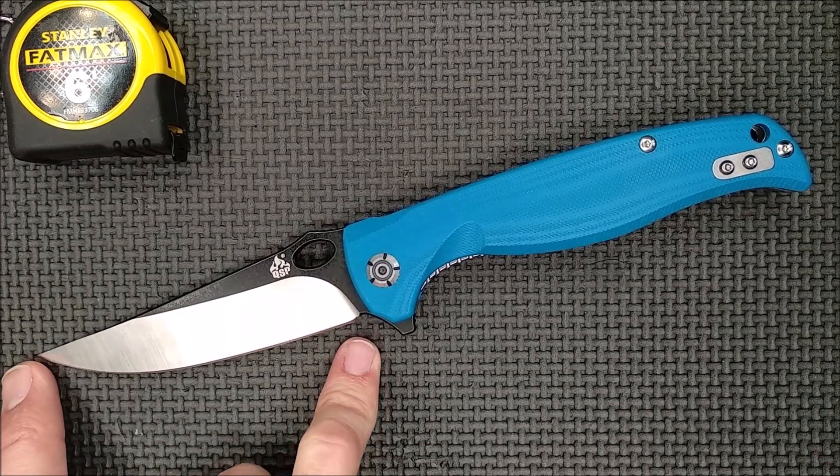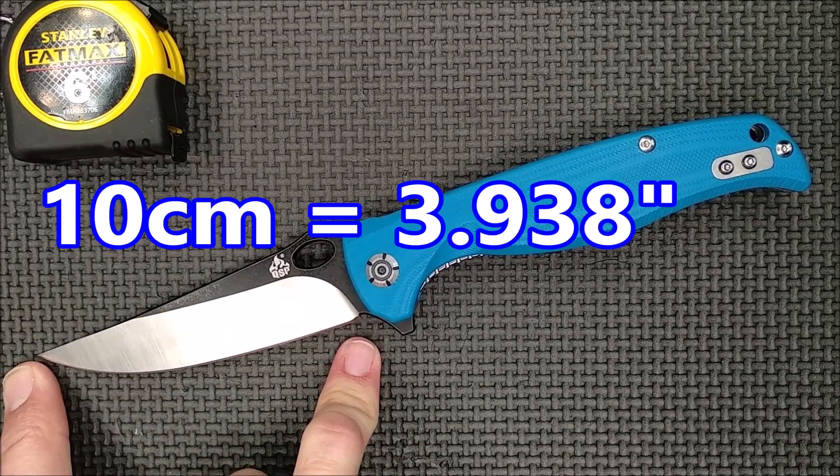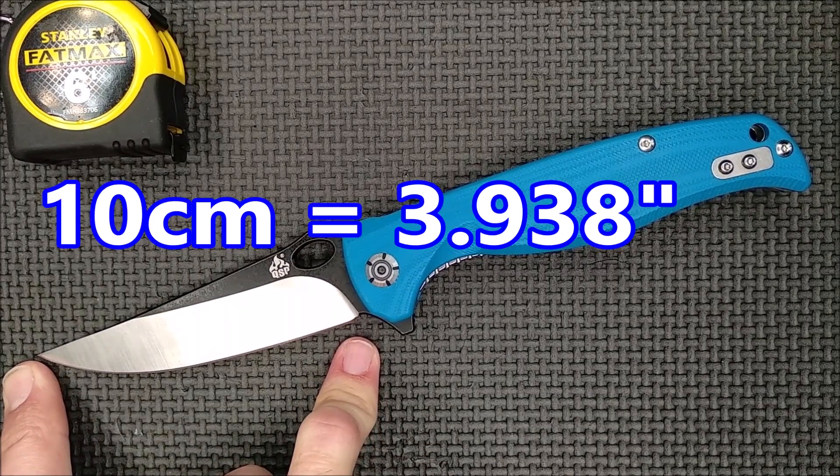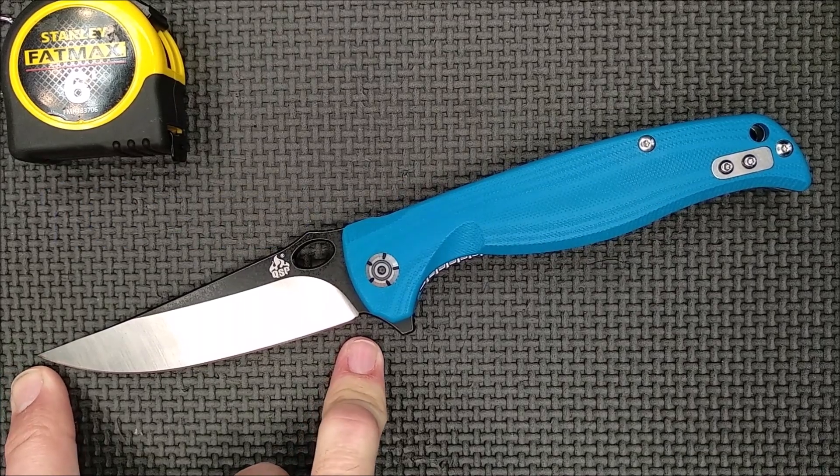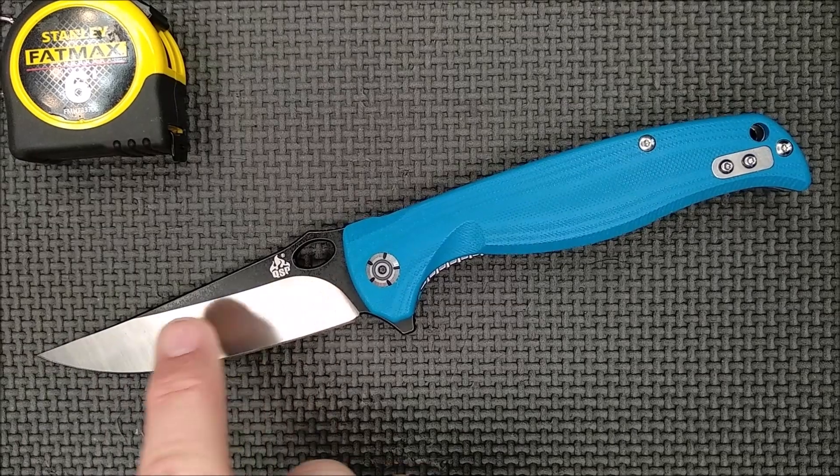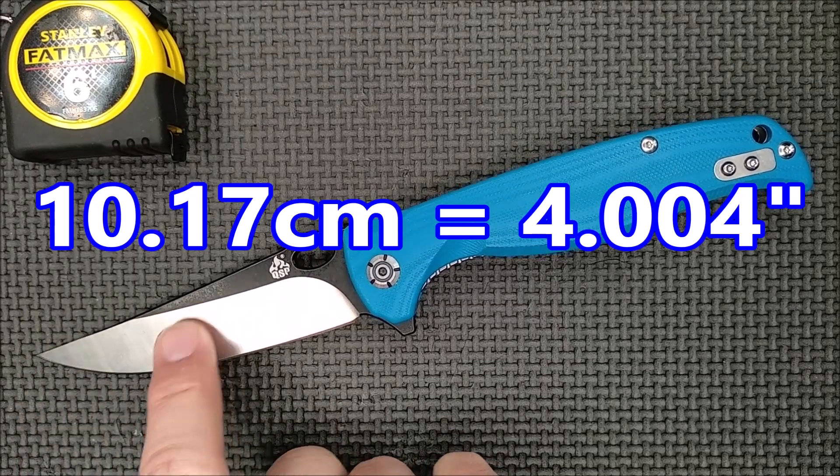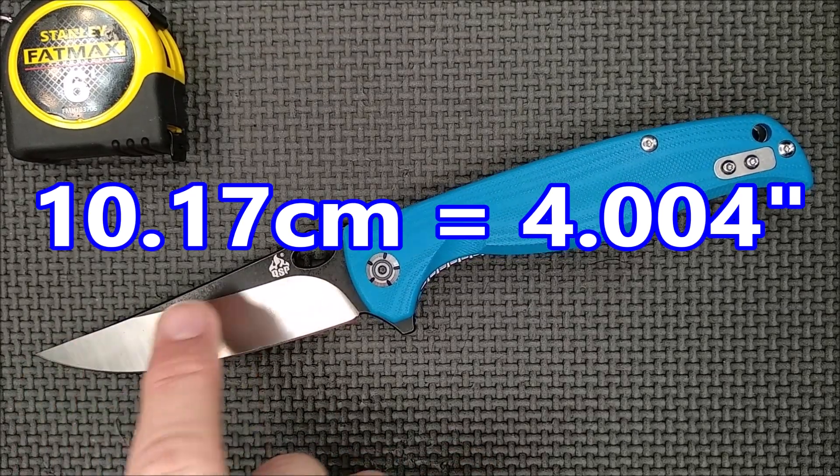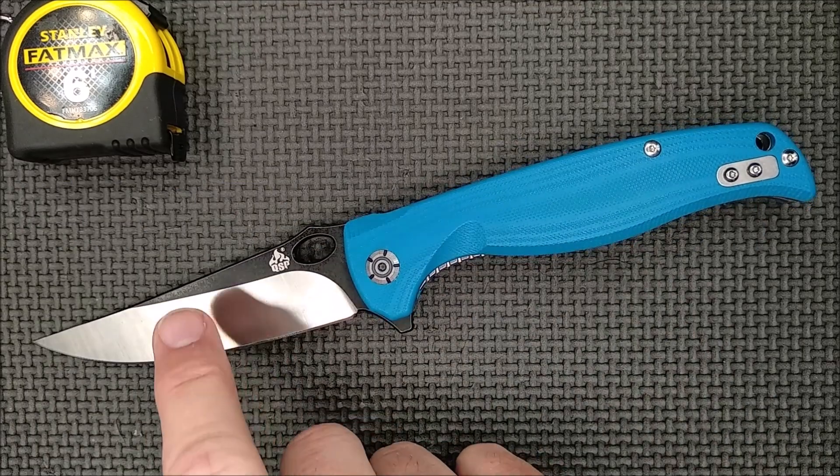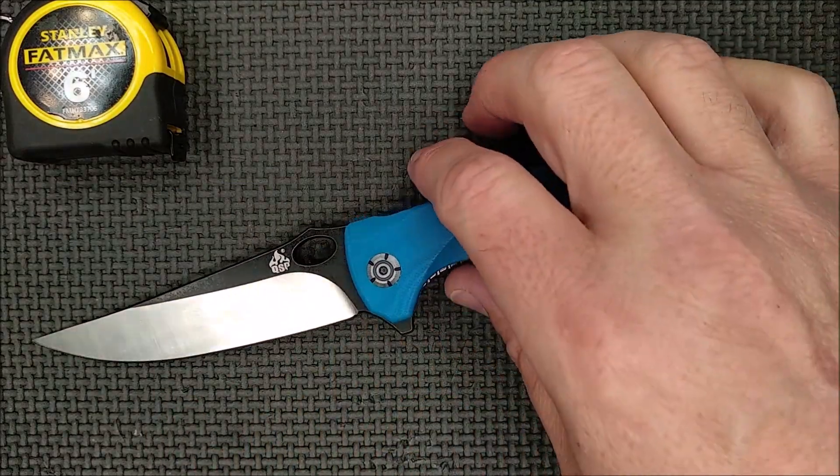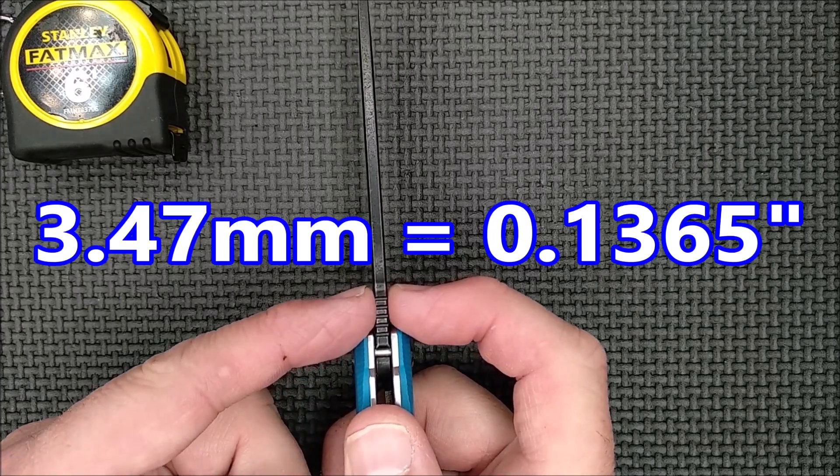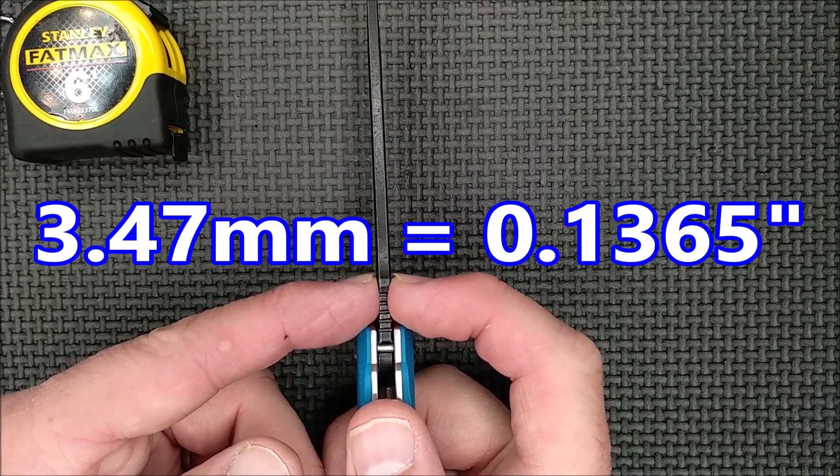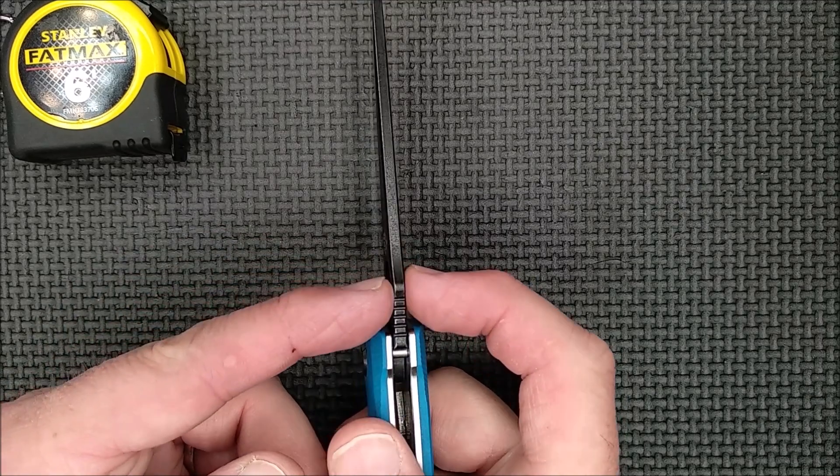The cutting edge length? 10 centimeters, right exactly. 3.938 of an inch, so 4 inch cutting edge, basically. The blade length? 10.17 centimeters, 4.004 inches. So there you go, like I said, a 4 inch blade. The blade thickness? Right here, it's 3.47 millimeters, which is 0.1365 of an inch, so over an eighth of an inch thick. That's nice.